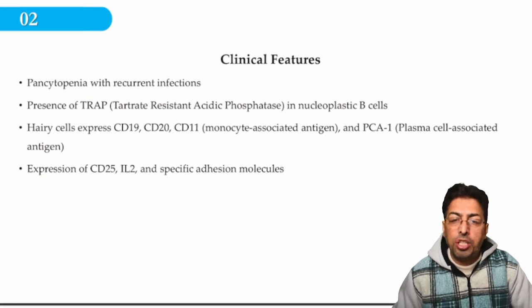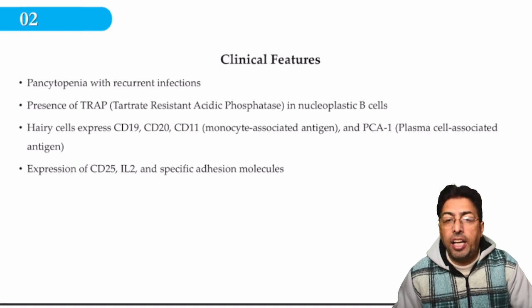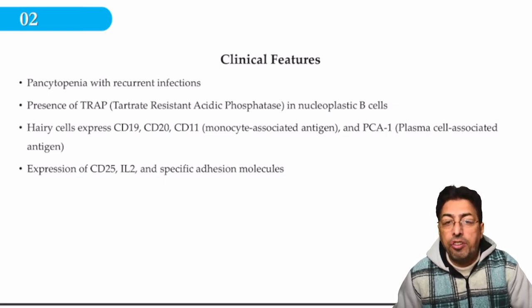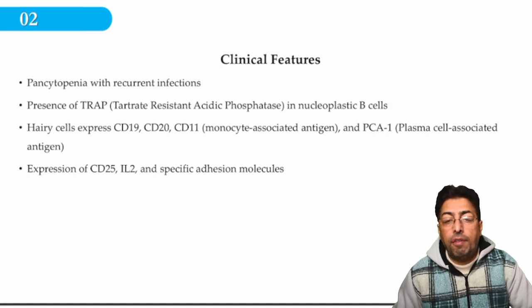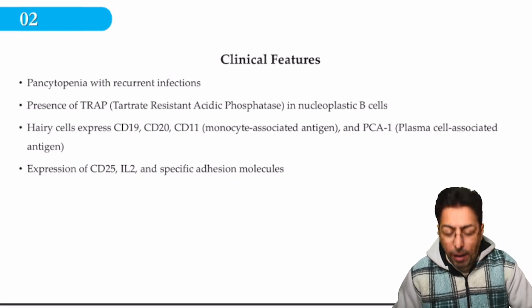In a typical case, in addition to massive splenomegaly, the patient will have anemia, leukopenia, and thrombocytopenia — i.e., pancytopenia. The patient will be having pallor, recurrent and repeated infections, and bleeding problems. The association of massive splenomegaly with pancytopenia is a classic feature of hairy cell leukemia, with or without lymphadenopathy — the lymph nodes may or may not be involved.